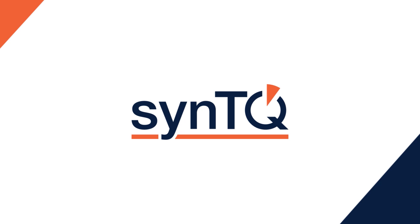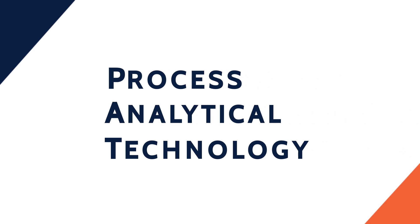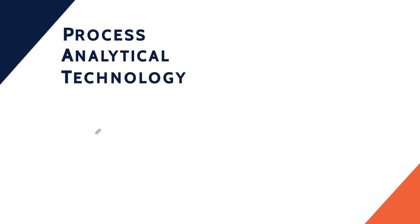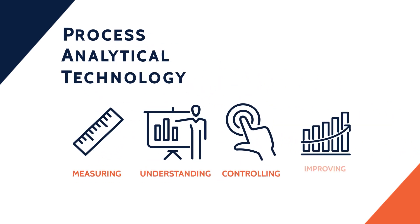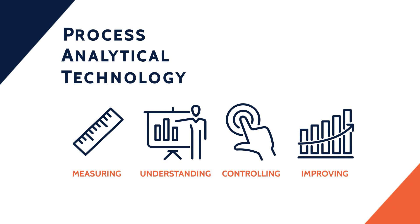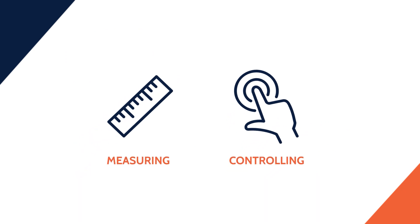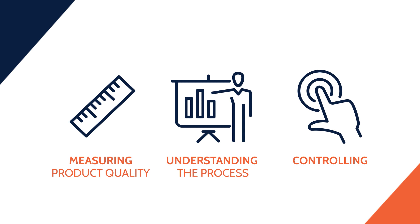It is what we call a PAT Knowledge Manager — so it's controlling knowledge within a PAT system. PAT stands for Process Analytical Technology and essentially it comprises of measuring, understanding, controlling and then improving your process. In traditional processes you may already be measuring and controlling, but the key differentiator is we're measuring product quality, understanding the process in a scientific way and controlling the process based on product quality.